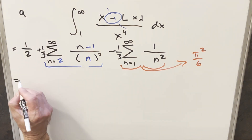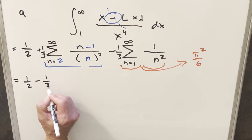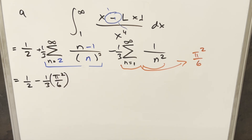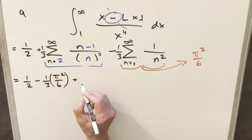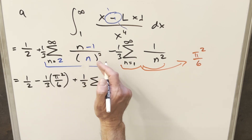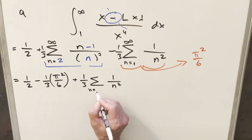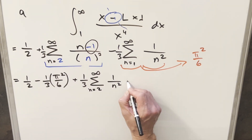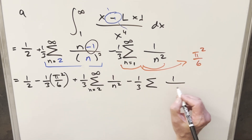Now rewriting with the one half in front, we have one third times pi squared over six, and since we now have n cubed in the denominator, we can divide it into the numerator and split into two sums. The first sum gives us one third times the sum of one over n squared, starting at two. For the second piece with minus one, distributing to the one third gives minus one third times the sum of one over n cubed.